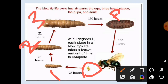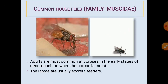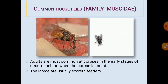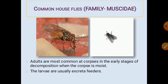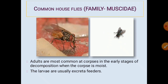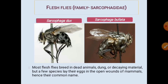Common house flies from the family Muscidae, order Diptera, are the most common at corpses in the early stages of decomposition when the corpse is moist, similar to blow flies. House flies are competitively smaller than bottle flies. Their larvae are usually excreta feeders and are mostly found at the rectum or intestine regions of the dead body.